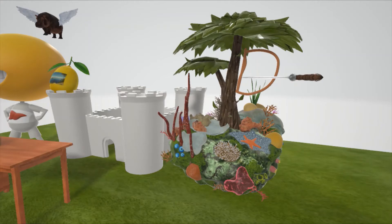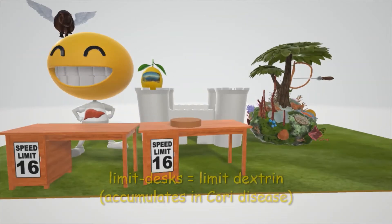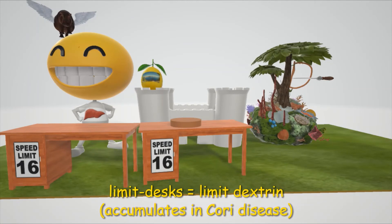D-branching enzyme helps mobilize glucose as part of glycogen analysis. So in Cori Disease, D-branching enzyme cannot do its job, and limit dextrin will accumulate. Take a look at these desks over here — the speed limit on the desks helps us remember limit dextrin. Limit dextrin accumulates as D-branching enzyme cannot do its job.